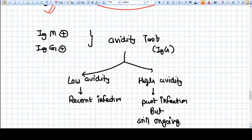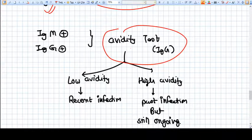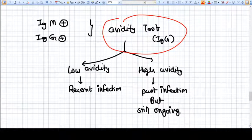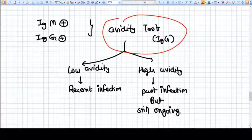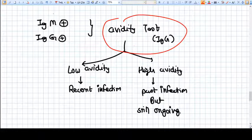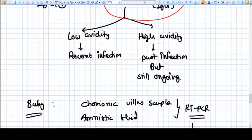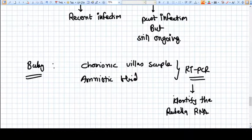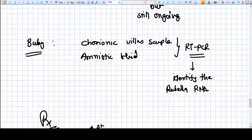How we proceed in this? We do the AVDT test. What is AVDT test? It determines the affinity of IgG antibody towards the virus. If low affinity is there, that is called low AVDT, then we know that the infection is a recent one. And if we have high AVDT IgG antibodies, that means the infection is older and past, but still going on.